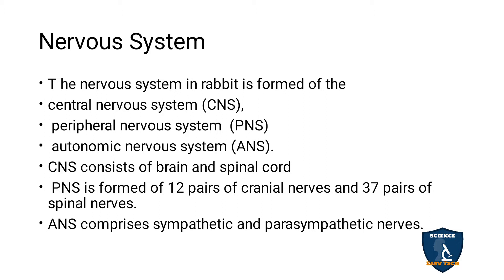The central nervous system is precisely called CNS, the peripheral nervous system is called PNS, and the autonomic nervous system is called ANS. The central nervous system consists of brain and spinal cord. The peripheral nervous system has 12 pairs of cranial nerves and 37 pairs of spinal nerves.